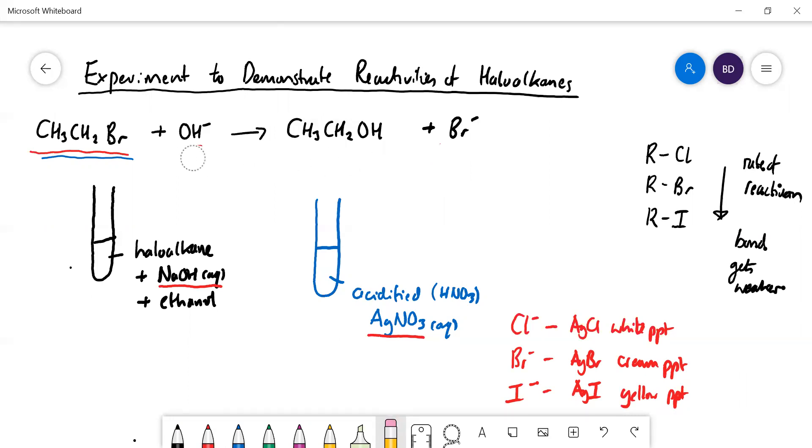Let's have a think about what we've got in these test tubes. We have the haloalkane, we've got sodium hydroxide as a reagent. Why have we got ethanol? That is because the haloalkane doesn't mix very well with water, so it's to enable the haloalkane to mix with the aqueous solution.